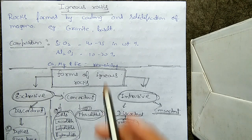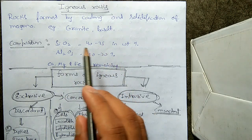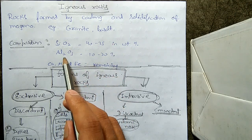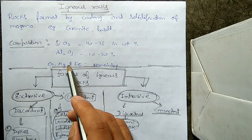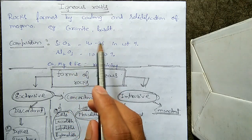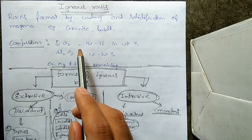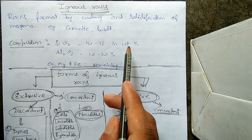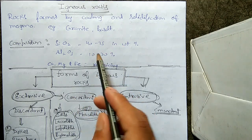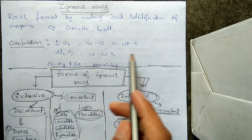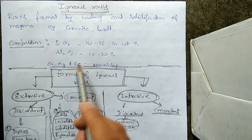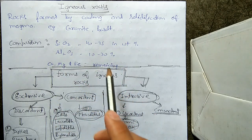Now let us look at the composition of igneous rocks. The main components are silicon oxide, aluminium oxide, calcium, magnesium, and ferrous — or iron. Silicon oxide is present at 40 to 75 weight percent, aluminium oxide at 10 to 20 percent, and the remaining percentage is made up of calcium, magnesium, and ferrous.